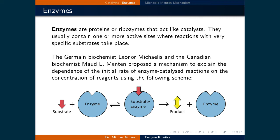The German biochemist Leonor Michaelis and the Canadian biochemist Maude Menten proposed a mechanism to explain the dependence of the initial rate of enzyme-catalyzed reactions on the concentration of reagents. This mechanism involves a very specific substrate and an enzyme forming an equilibrium with the combined substrate enzyme complex. This complex then reacts to form the product and regenerate the enzyme to catalyze another substrate.